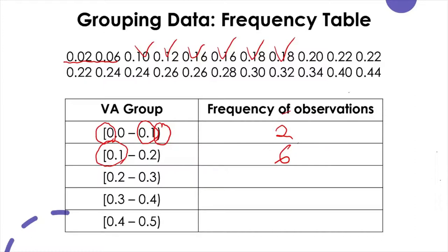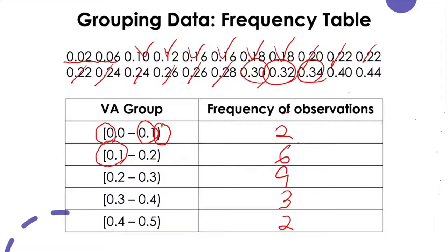For the next interval, counting gives us 9 — and we stop there. The following interval starting from 0.3 gives us 3. And the remaining last interval has 2. This is how you make a grouped frequency table — a summary table with a number of intervals that divides the range of data into a small, manageable number of groups or intervals.